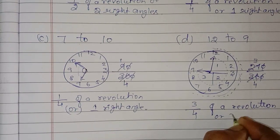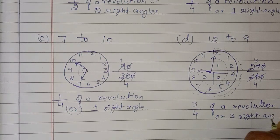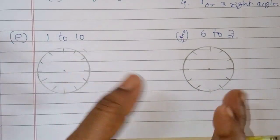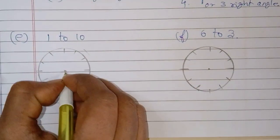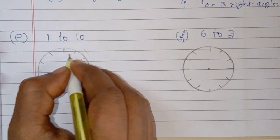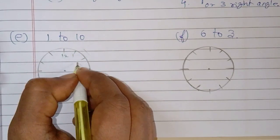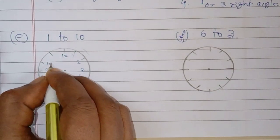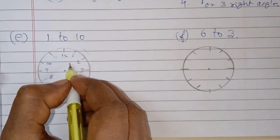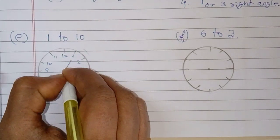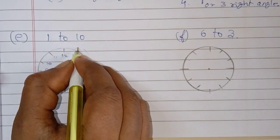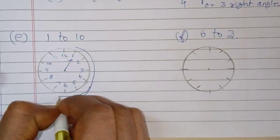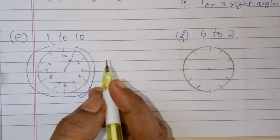The answer is 3 by 4 revolution, or 3 right angles. Now, from 1 to 10 — we have to mark the clock in one circle. We have to reach 1 to 10. Mark: 1, 2, 3, 4, 5, 6, 7, 8, 9, 10, 11. Now we have to go clockwise from 1 to reach 10.